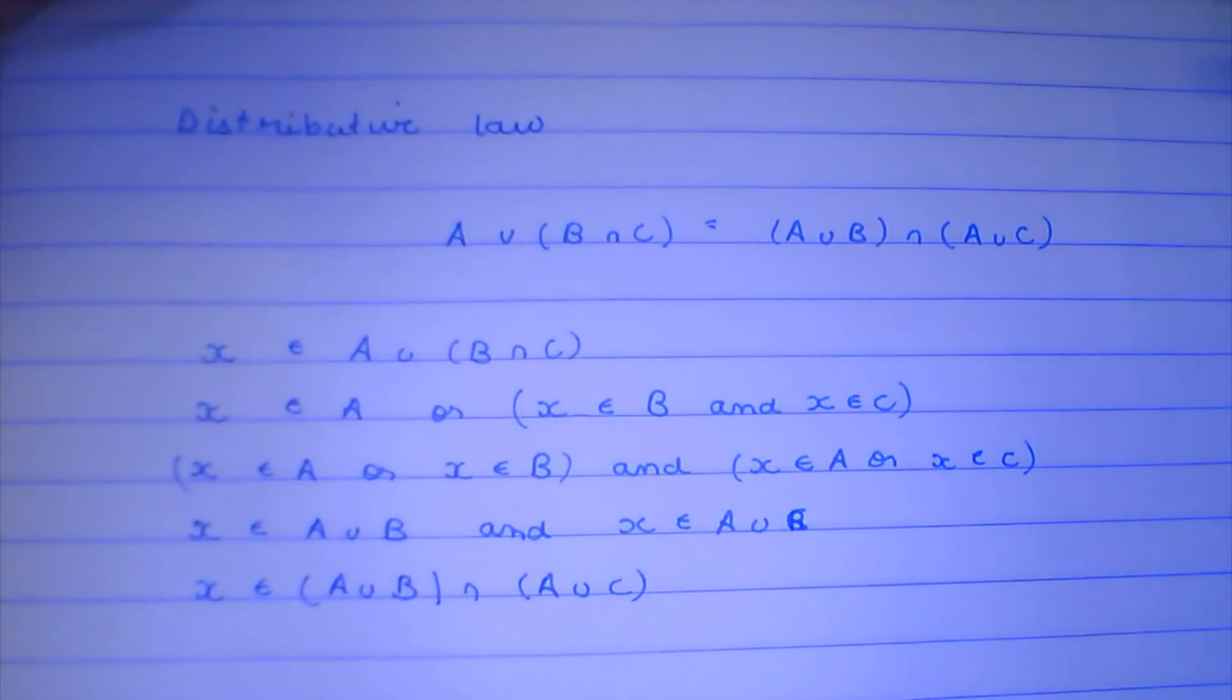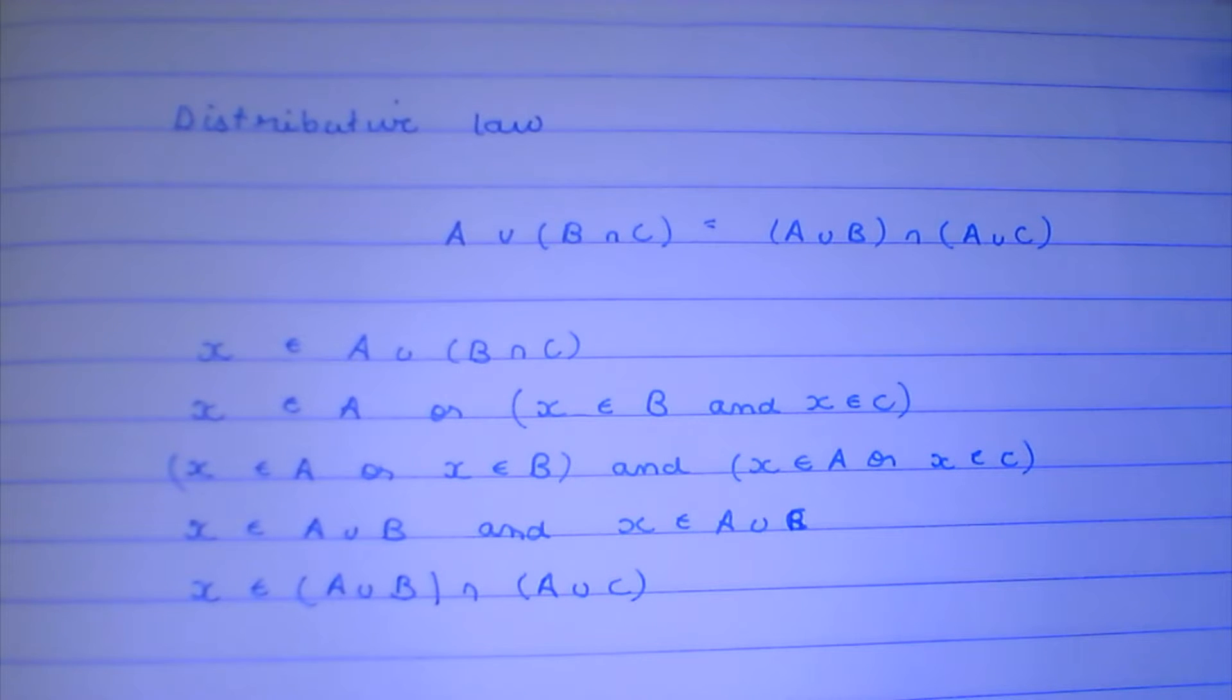And from there, X belongs to (A union B) intersection (A union C). And we prove the first type of distributive law.